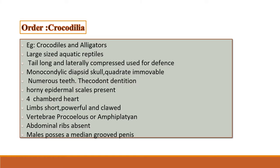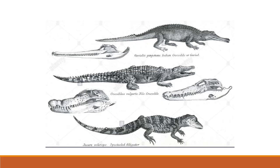Order Crocodilia includes crocodiles and alligators, which are the largest living reptiles — carnivorous and predatory aquatic organisms. They have a four-chambered heart, muscular gizzard, and thecodont dentition. Females come to land and lay their eggs in nests constructed from decaying vegetation or in pits. Crocodiles have a short slender snout whereas alligators have a blunt broad snout, and alligators are less aggressive than crocodiles. Crocodilus palustris is the common Indian crocodile and Gavialis gangeticus is the crocodile seen in the Ganges.